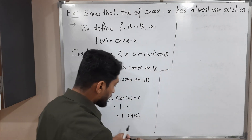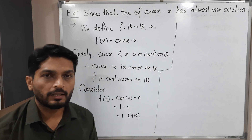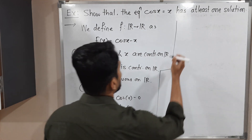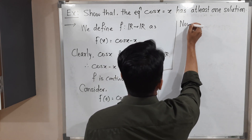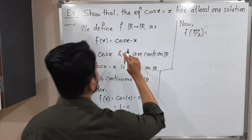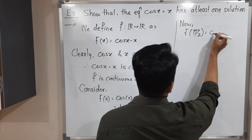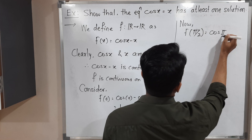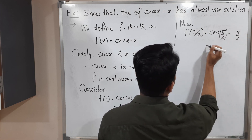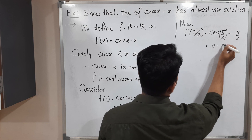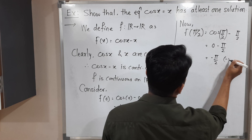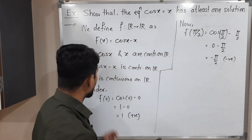Now we select a second point. Let's take π/2. Computing f(π/2): putting x = π/2 gives cos(π/2) − π/2. The value of cos(π/2) is 0, so we get 0 − π/2 = −π/2, which is a negative value. So f(0) is positive and f(π/2) is negative.